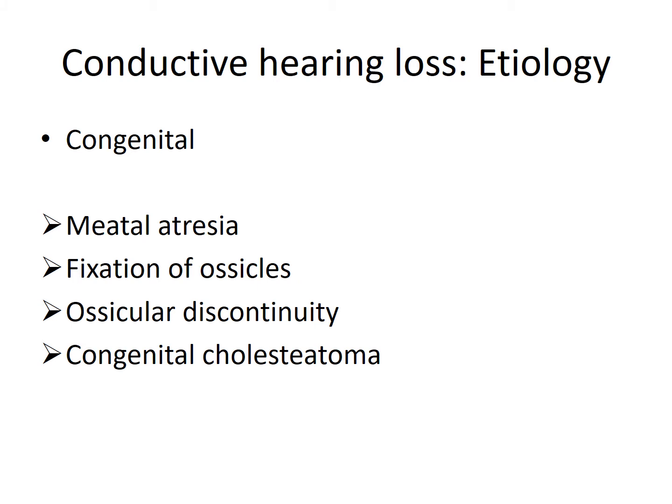Conductive Hearing Loss can be either Congenital or Acquired. Any pathology of the External Ear and Middle Ear up till the stapedio-vestibular joint will cause Conductive Hearing Loss. Some of the common Congenital Anomalies are Meatal Atresia — that is the External Auditory Meatus or the External Auditory Canal is not fully developed, so it is either Atresia or Stenosed, leading to Conductive Hearing Loss.